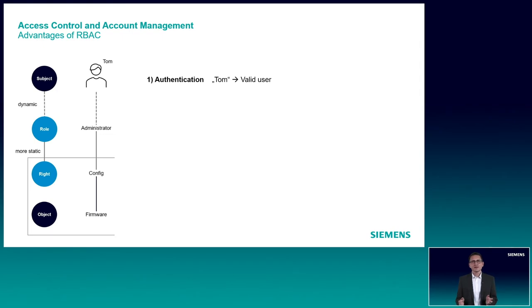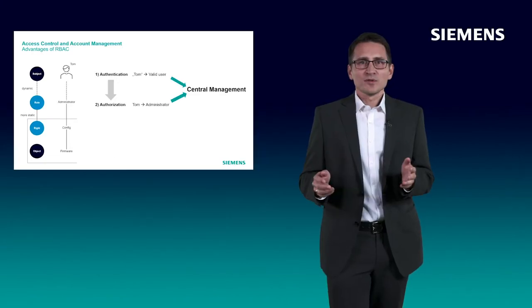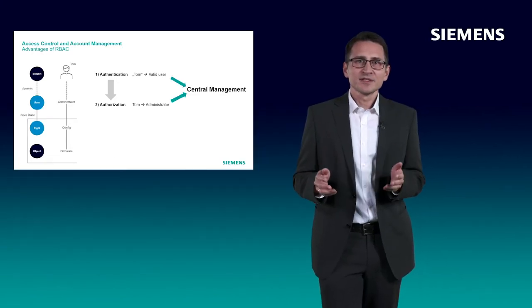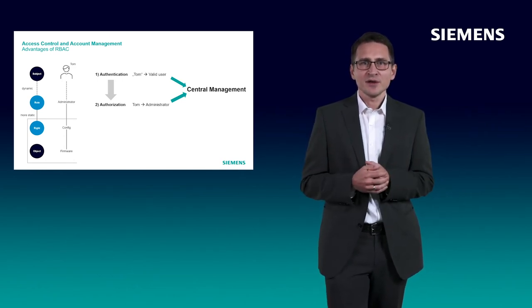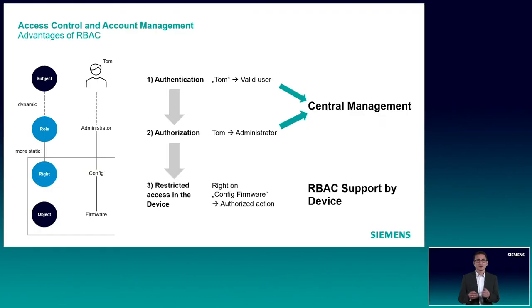The following methods are part of the role-based access control concept. The first step when Tom wants to connect to the device is the authentication. This means he provides the username and password. The second step is the authorization. This means that Tom is assigned the role administrator. Both authentication and authorization are centrally managed, for example in a central RADIUS server or Active Directory.